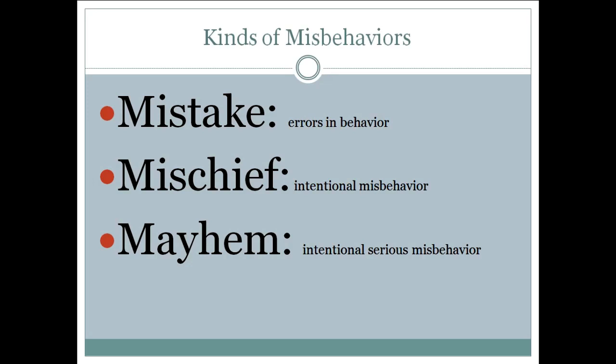We want to constantly be asking ourselves when children need guidance with behavior: Was this a mistake? Was this mischief? Was this mayhem? Sometimes we don't know for sure, and I would say it's probably better to err on the lower end rather than assuming it's mischief when it was truly a mistake. All discipline is an opportunity to teach and guide, and looking at whether it's a mistake, mischief, or mayhem can help guide our responses.